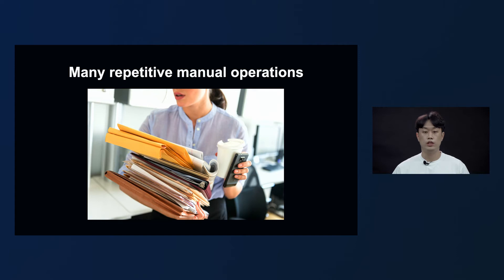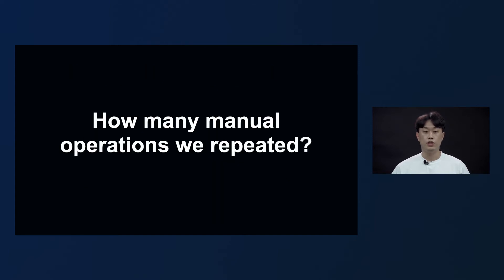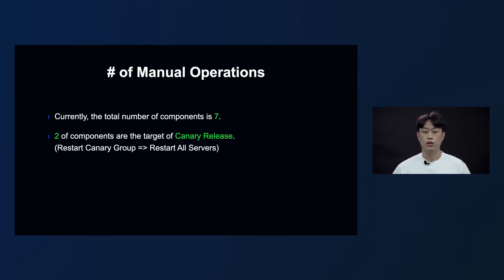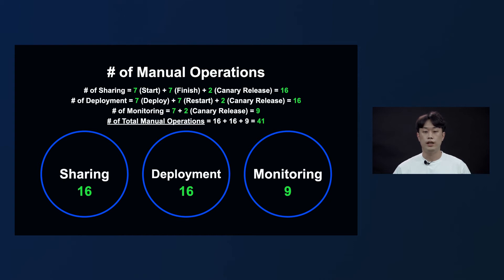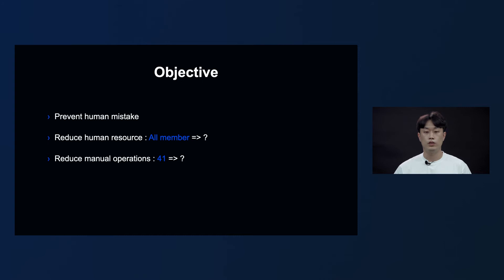Lastly, there are repetitive manual operations in the release process. How many manual operations did we repeat? Currently, the total number of components is 7. Two of the components are the target of canary release, so we do canary release of those two first and then do an entire release of the servers. We found out that for the seven components and two for the canary release, it required 41 manual operations. Based on the problems, we set the objectives for the automation: first, preventing human mistakes; second, reducing human resources required for release; third, reducing the number of manual operations in the process.